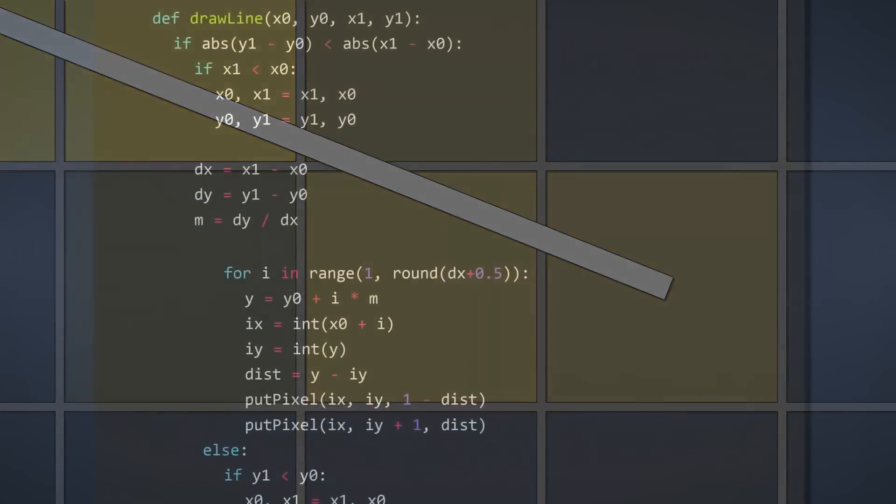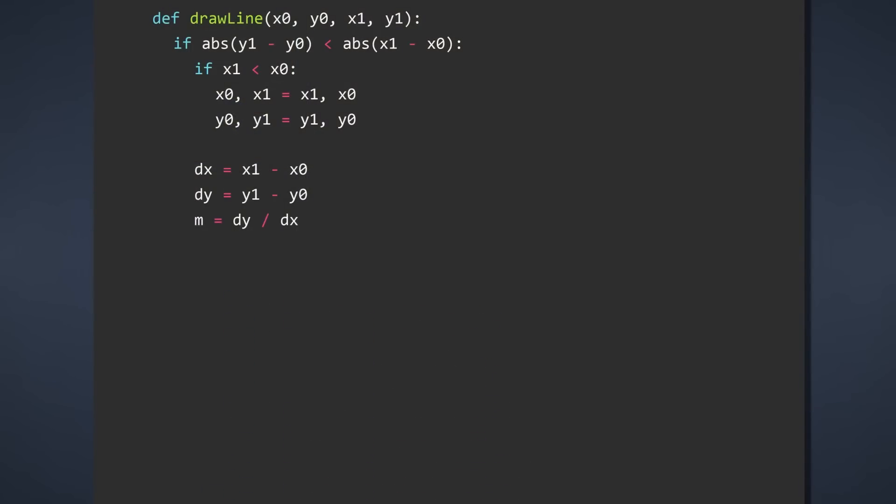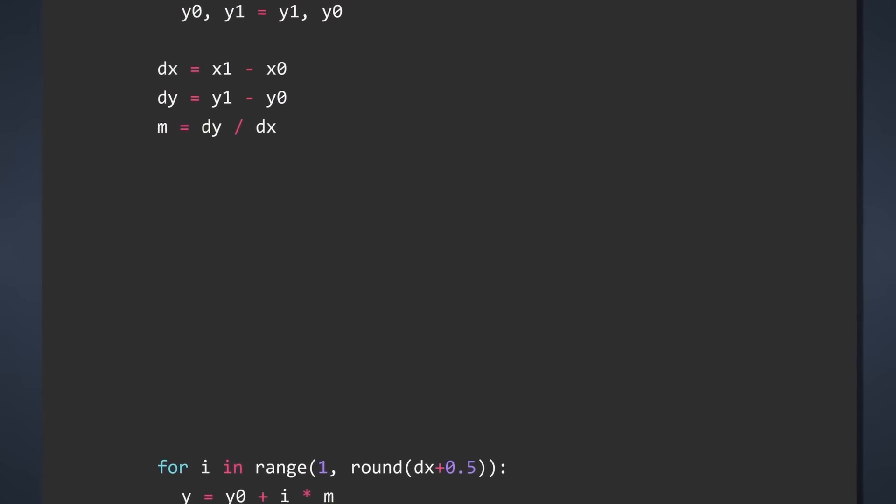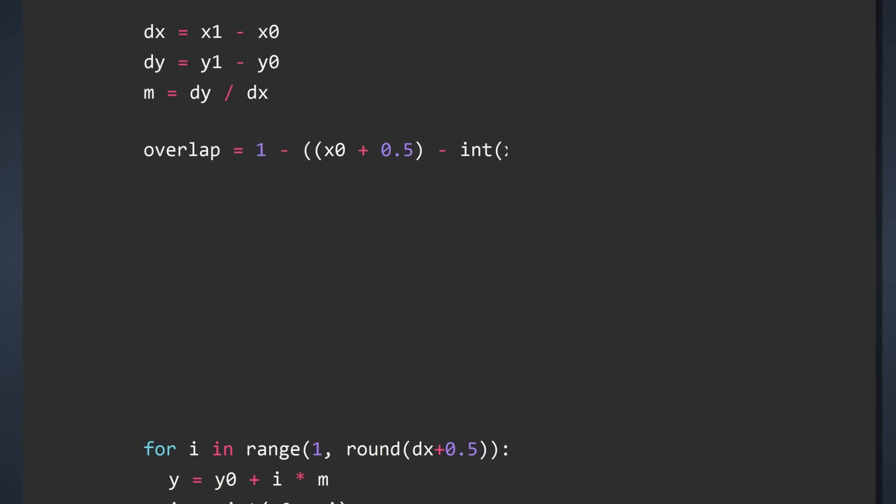Okay, time to go back to our code and update it. First, we calculate the X overlap distance. And then we calculate the vertical distance, just like we did with all the other pixels.